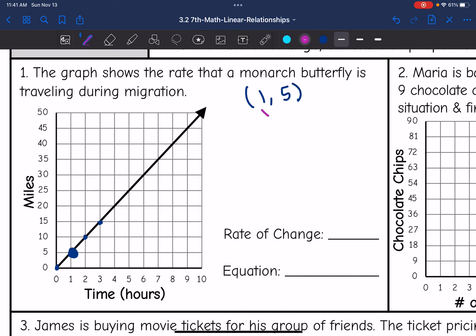So this is my x value. This is my y value. So to find k, I will do 5 divided by 1, which is 5. So the rate of change is 5. And that means my equation is y equals 5x.